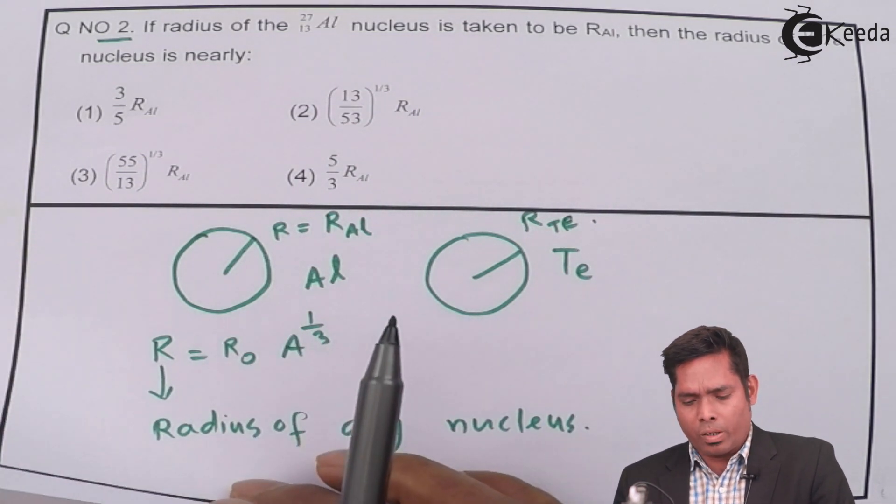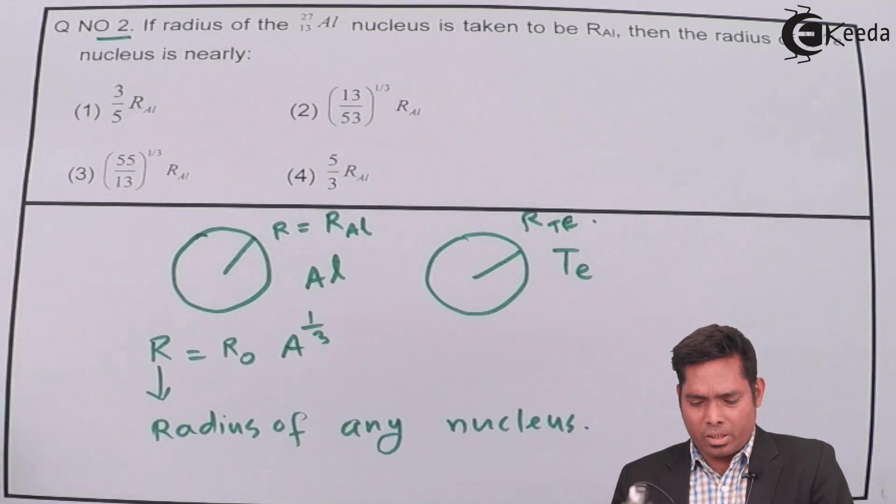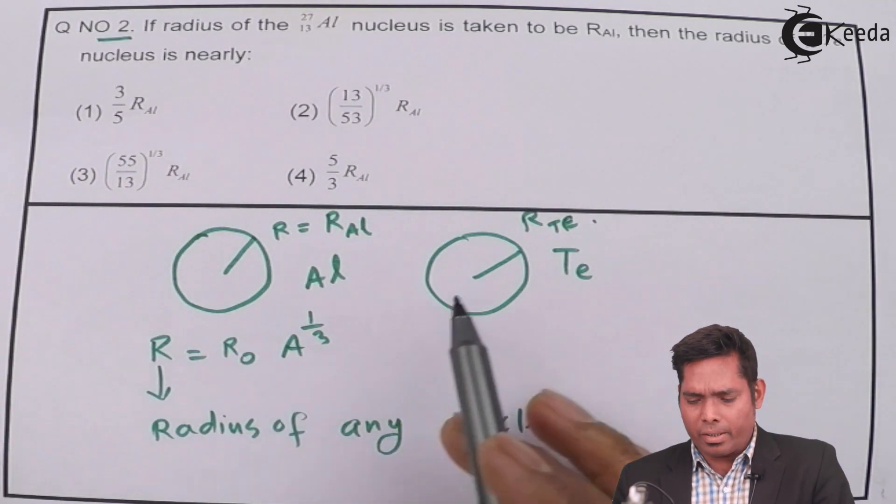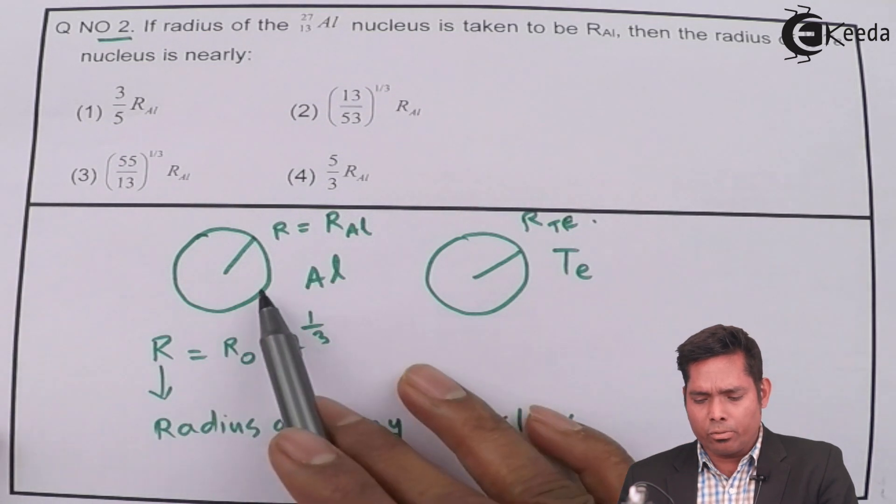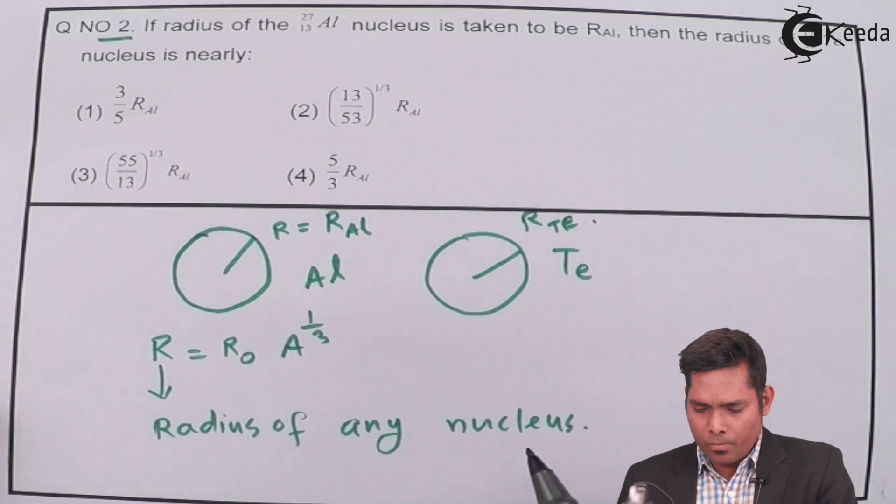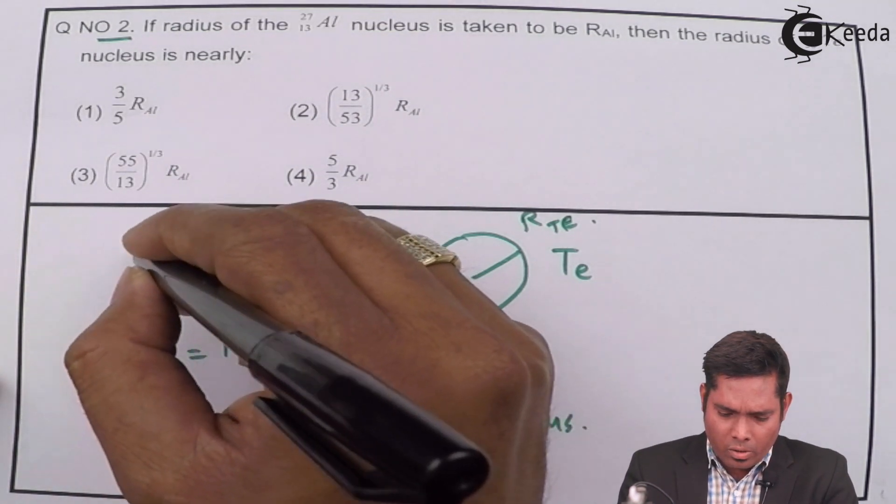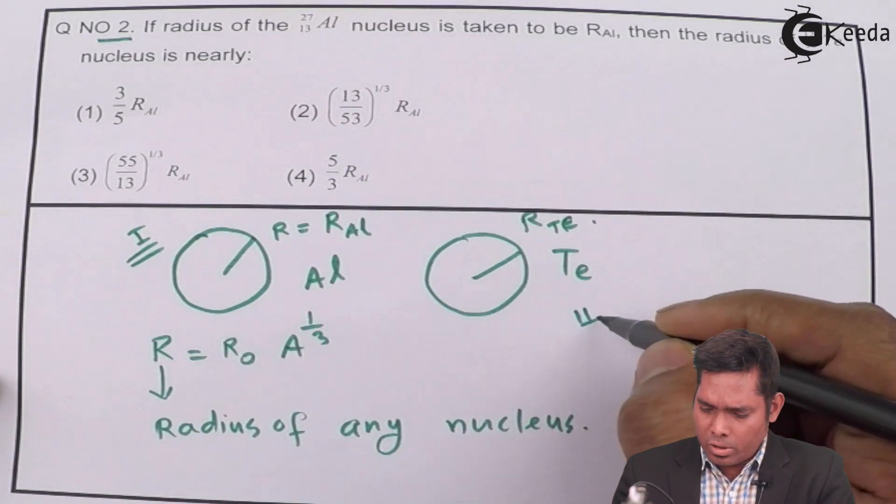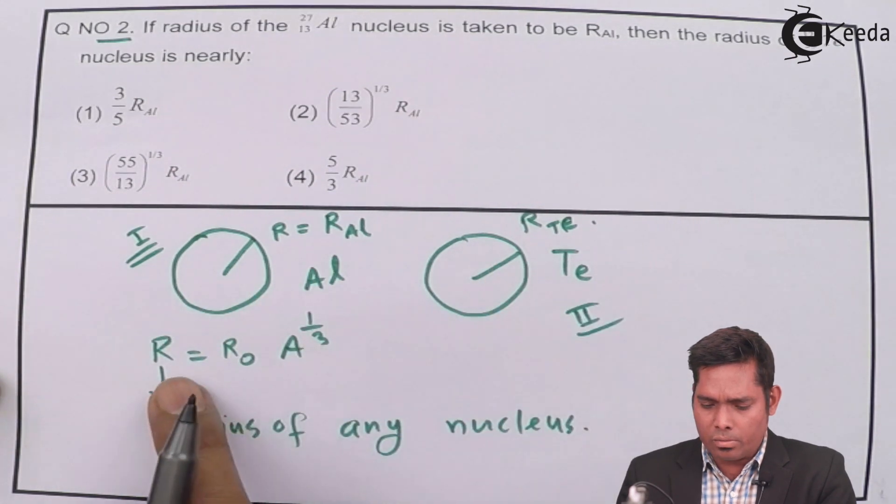The exact value is not required in this case, because when you have the comparison and divide, this R₀ will cancel out. This is our situation one and this is situation two. We write for both nuclei this formula and divide it to get the answer.